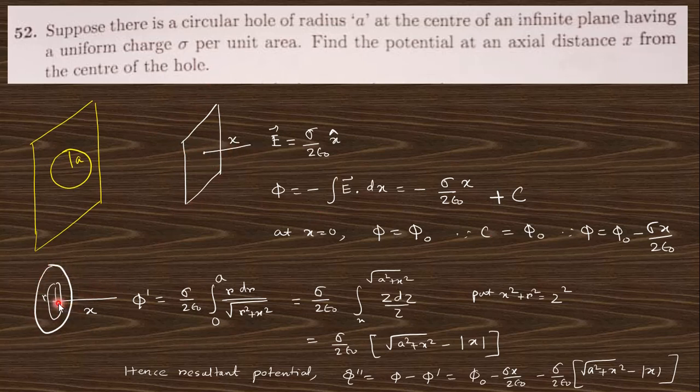For an infinite plane sheet, integrating the electric field gives this potential. For a disk, the potential will be like that—integrating gives this value. Since the disk is cut out, this much potential will be subtracted from the total value. This is the potential at distance x.